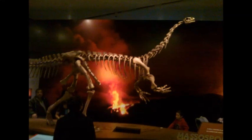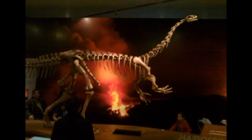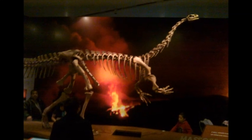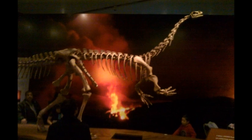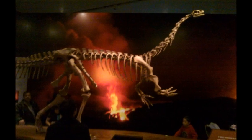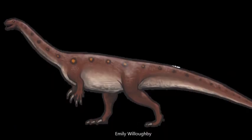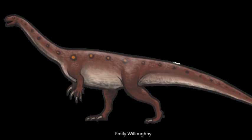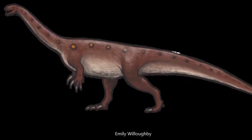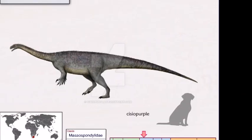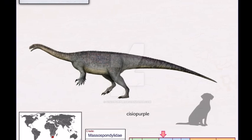Massospondylus, meaning 'longer vertebrae', was a genus of early sauropodomorph dinosaurs that lived in Africa during the early Jurassic period around 200 million years ago. It was a medium-sized sauropodomorph or prosauropod that had a shorter and lower head than its European relative Platyosaurus. It measured 4 to 6 meters in length and weighed a ton in weight.